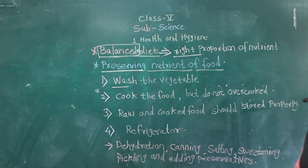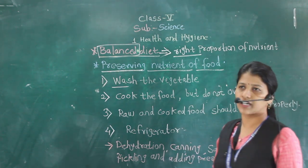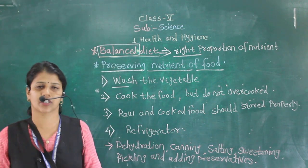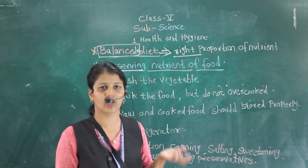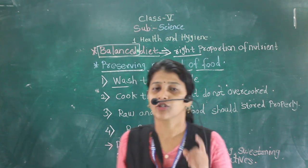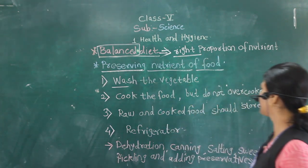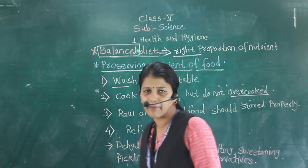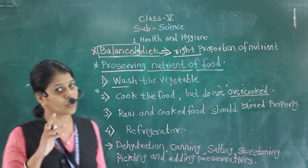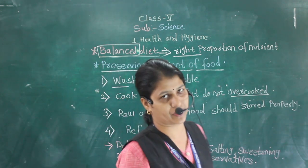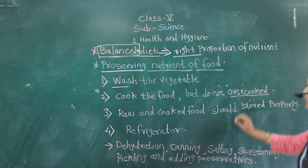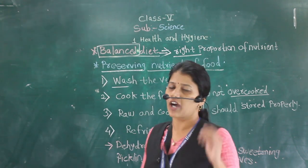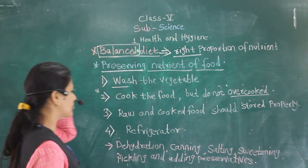Next, you have to cook the food. Whatever raw vegetable you bring from the market, you have to cook it. But you should not overcook the food. If you overcook, what will happen? You will lose all the nutrients. So cook the food properly and do not overcook it, otherwise you will lose the nutrients.